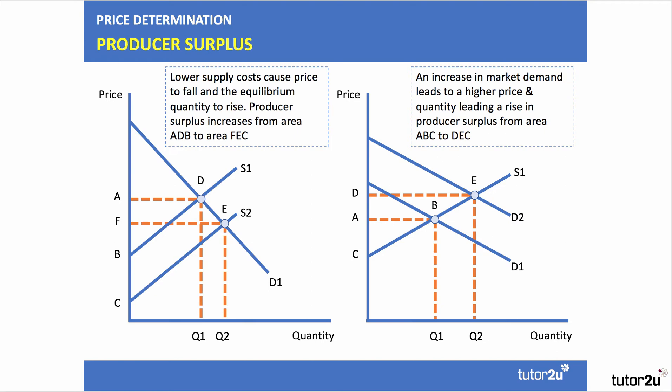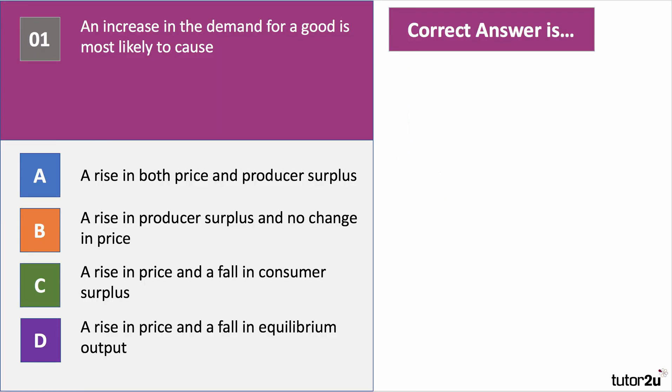Okay, let's try some questions. Good chance here for you to have a pen or paper handy. Just press the pause button when you want to answer the question, and then come back to us for the answer. We have eight questions in this particular part of the blast series. Question number one: an increase in the demand for a good is most likely to cause what to happen?